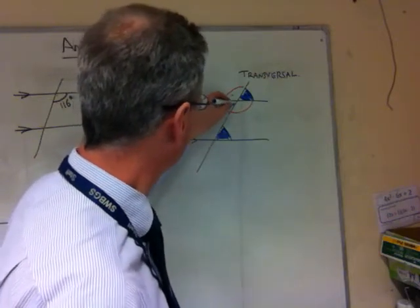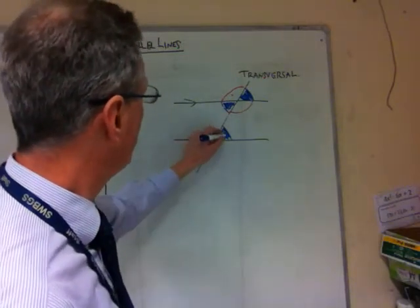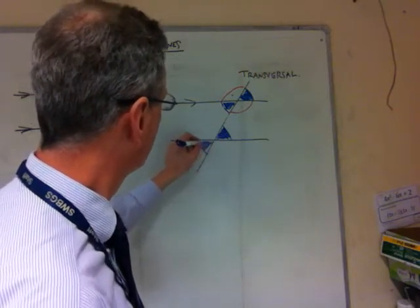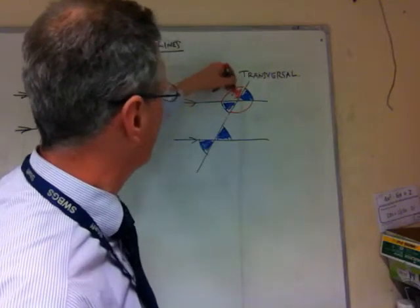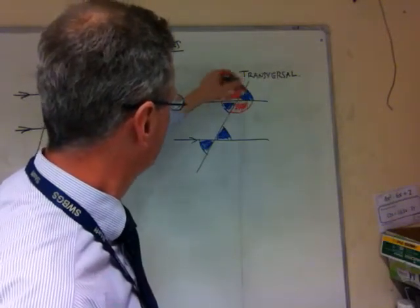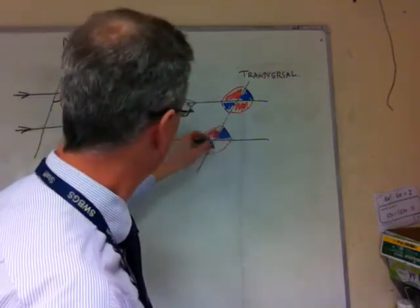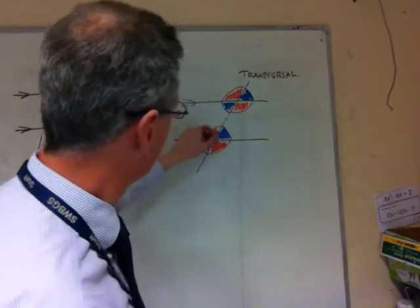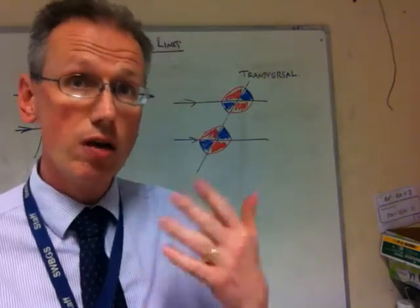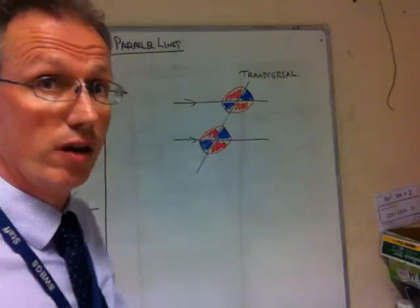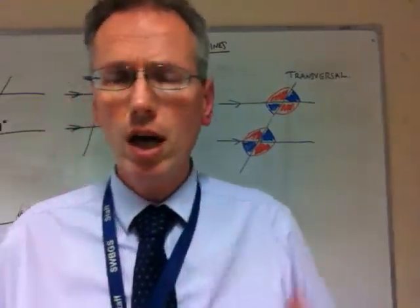Colouring all the angles in makes it nice and clear. We can apply the concept of vertically opposite angles again: if this one is at a certain angle, this one here is also the same. We can do the same with the red angles. So, within angles on parallel lines, there are only ever two angles to consider — it's just a matter of identifying which they are.